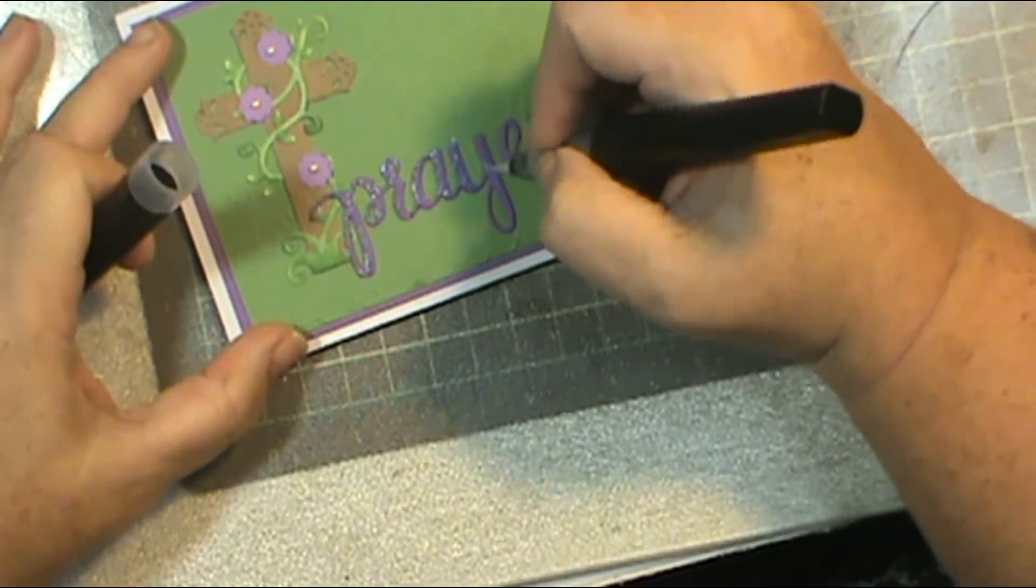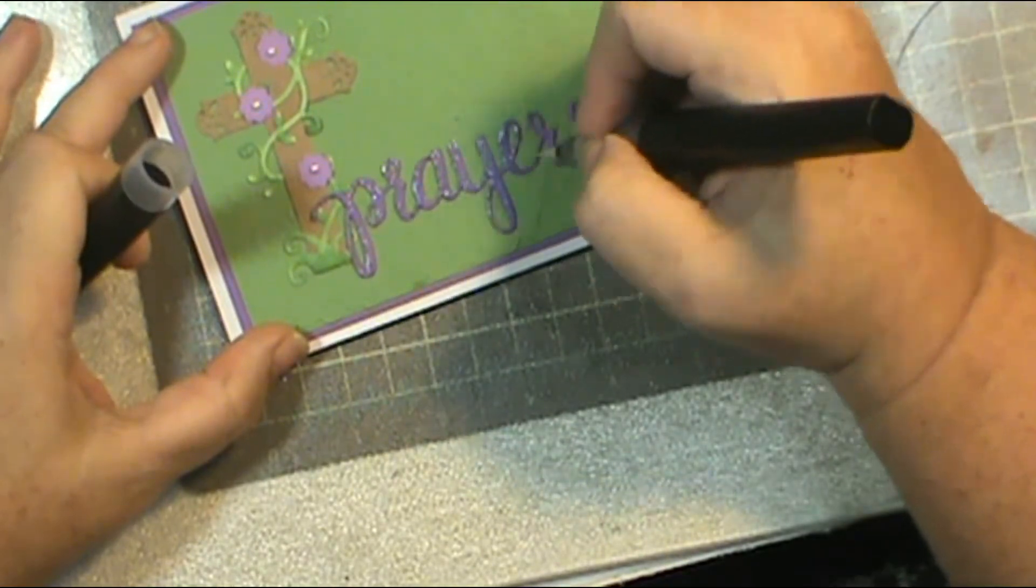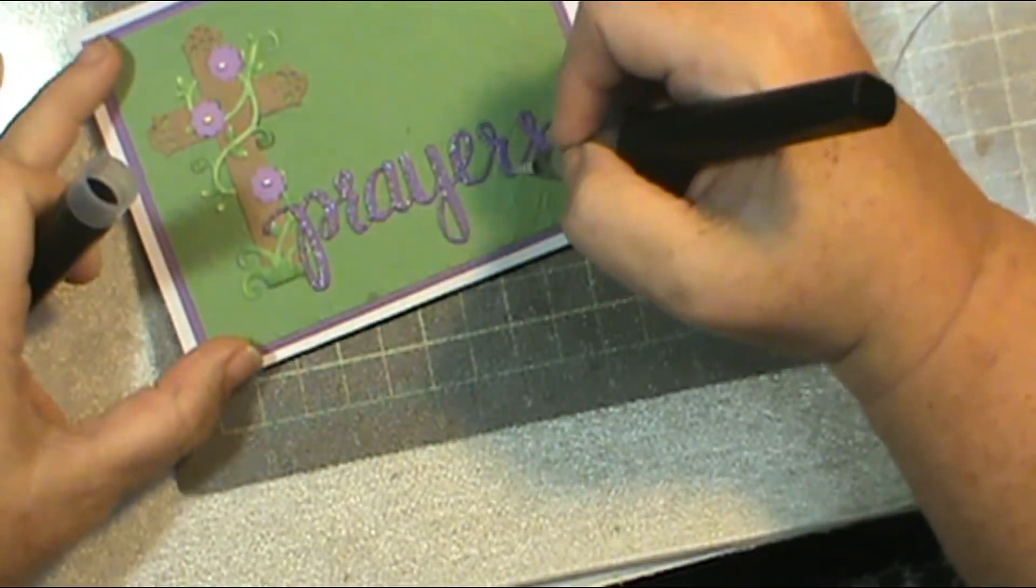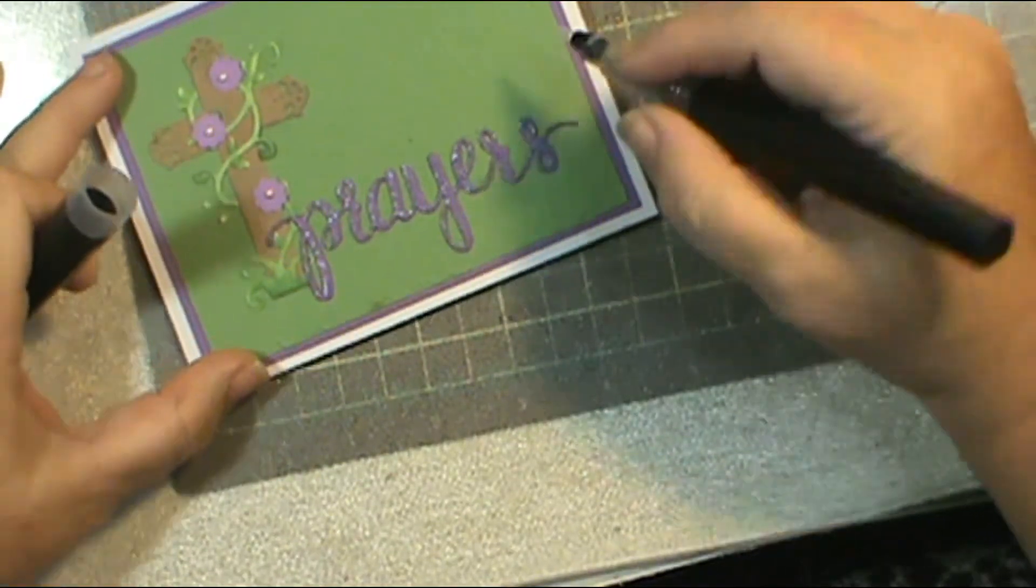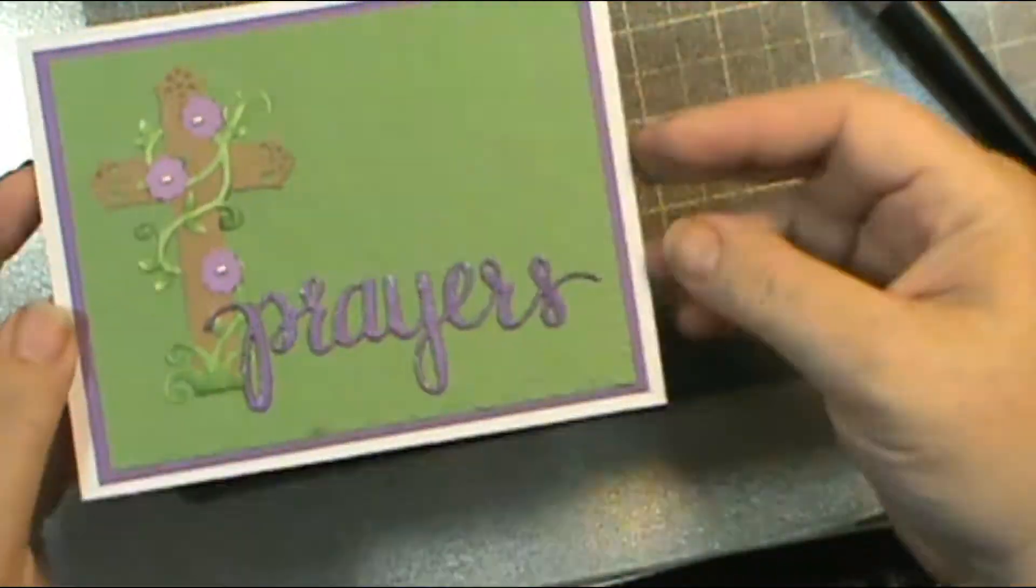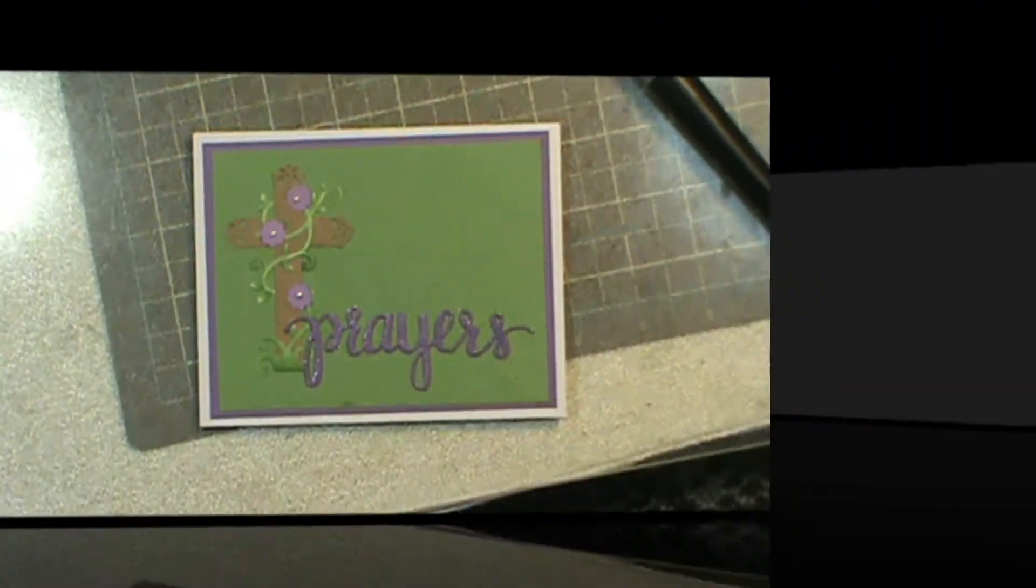I'm going to use my Spectrum Noir Shimmer and just go over the word prayers and make it all nice and glittery. I know a bunch of you squeeze the tube a little bit to get a little extra shimmer out. I've done it a hundred times, but I did it yesterday and a big old blob came out. There was so much it wouldn't even soak into the paper.